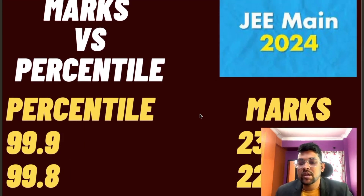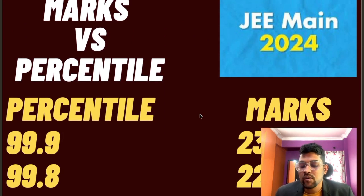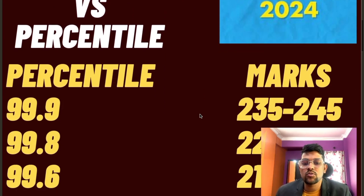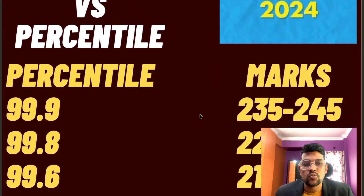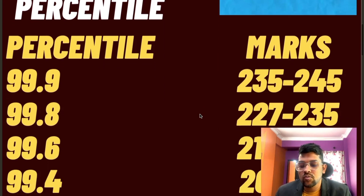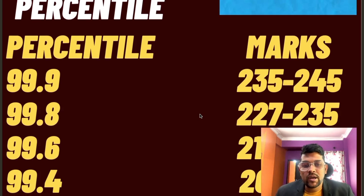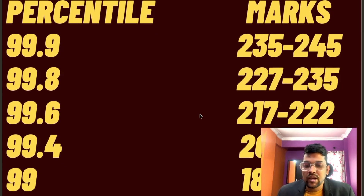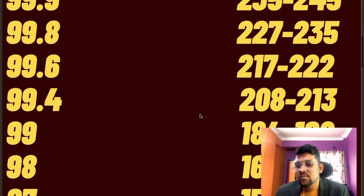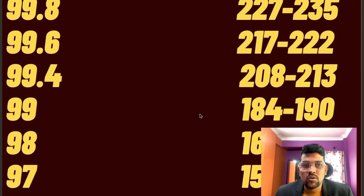For 99.9 percentile, 235 to 245 marks is required. For 99.8, 227 to 235. For 99.6, 217 to 222. For 99.4, 208 to 213 marks. For 99 percentile, 184 to 190. For 98 percentile, 168 to 175.